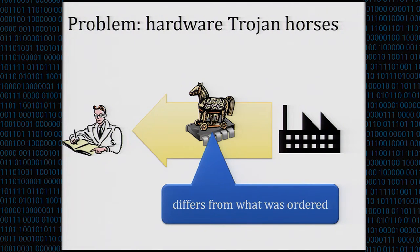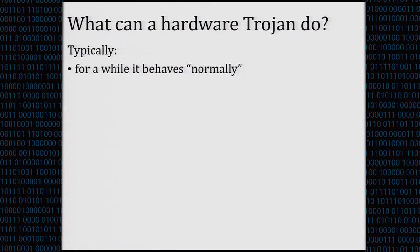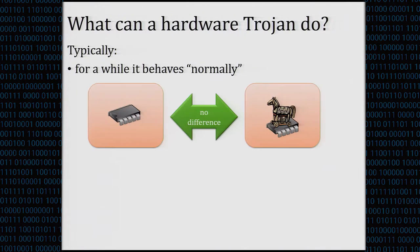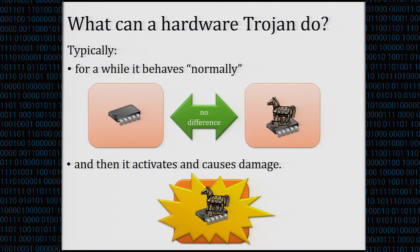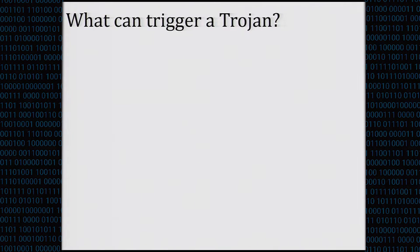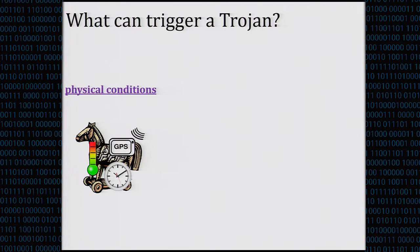Hardware Trojans were explained in the previous talk. Typically a hardware Trojan will behave normally for a while — the device with the Trojan behaves completely as it's supposed to — and then it activates and causes damage. That's what makes hardware Trojans such a difficult problem. What can trigger a hardware Trojan? There can be physical conditions, like a GPS antenna embedded in the device, so the device would malfunction at a certain position, or based on clock or temperature information.